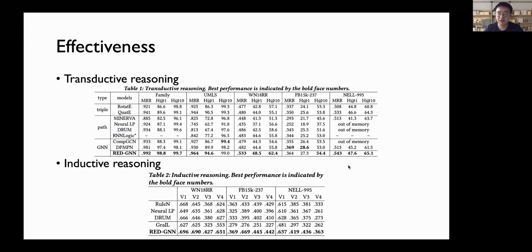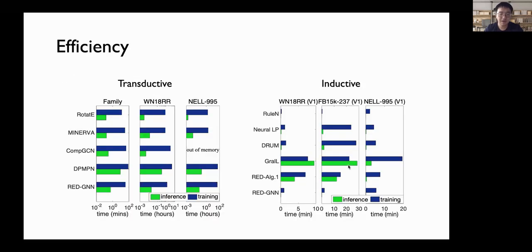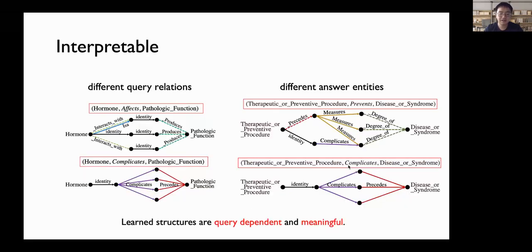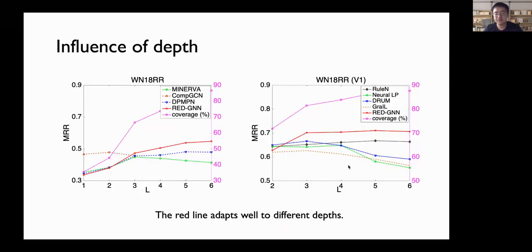With the diversity of relational digraphs, RED-GNN achieves significant results on both transductive and inductive reasoning. It is also very efficient compared with the baseline. The learned structures are query-dependent and meaningful. By changing the depth of our model, it adapts well to different depths.